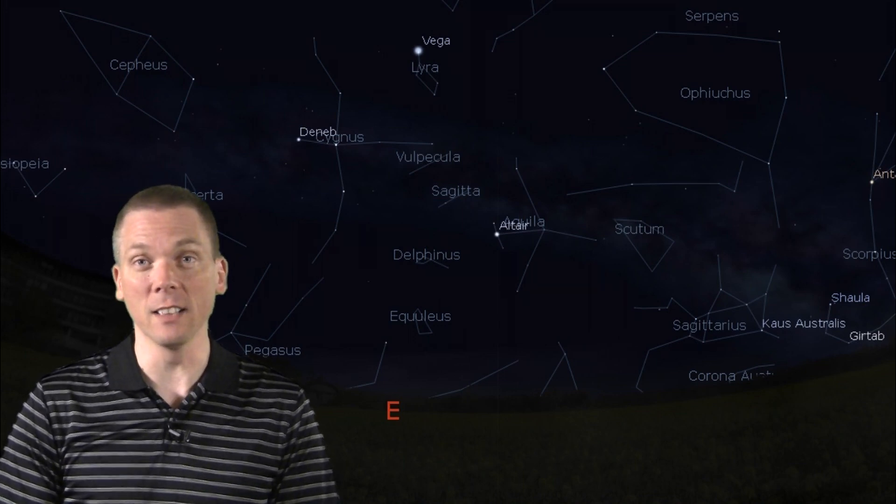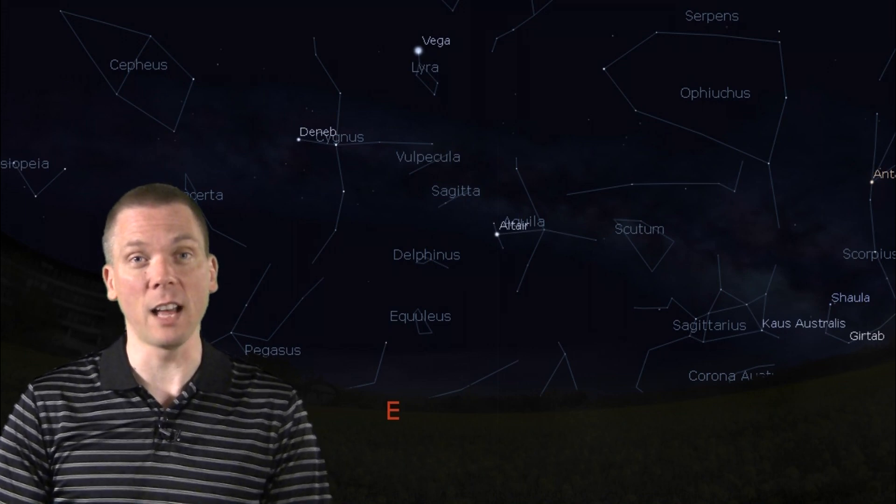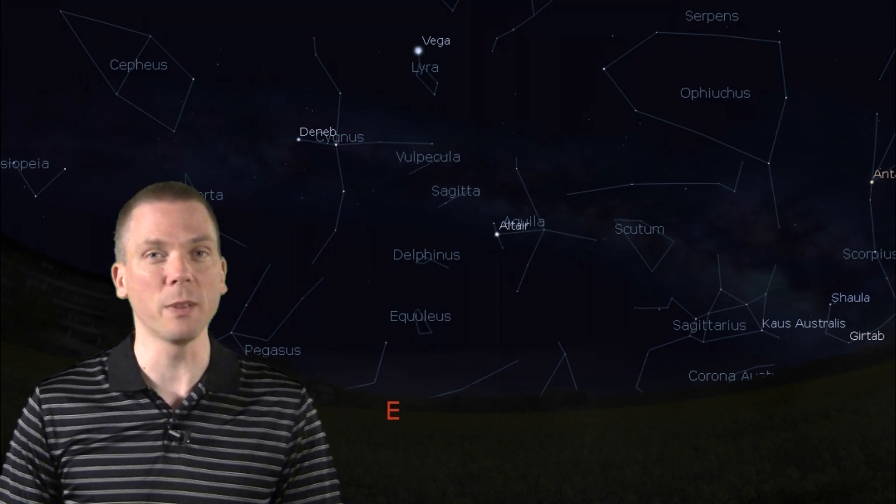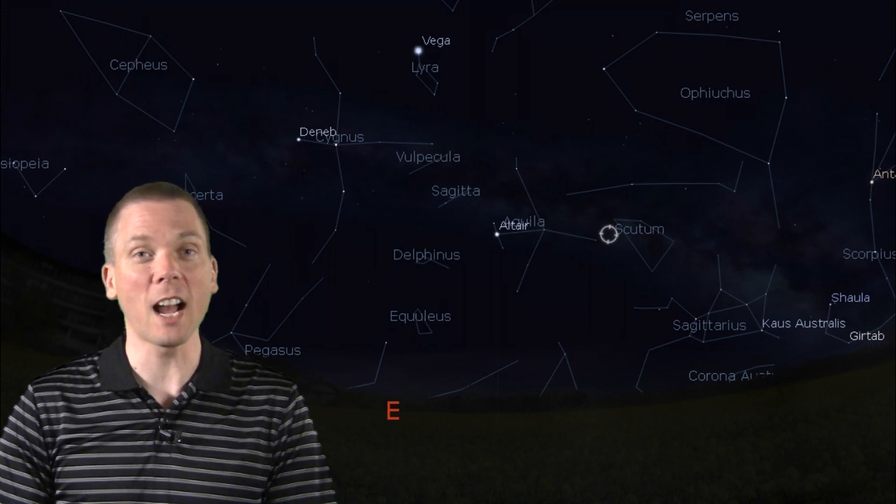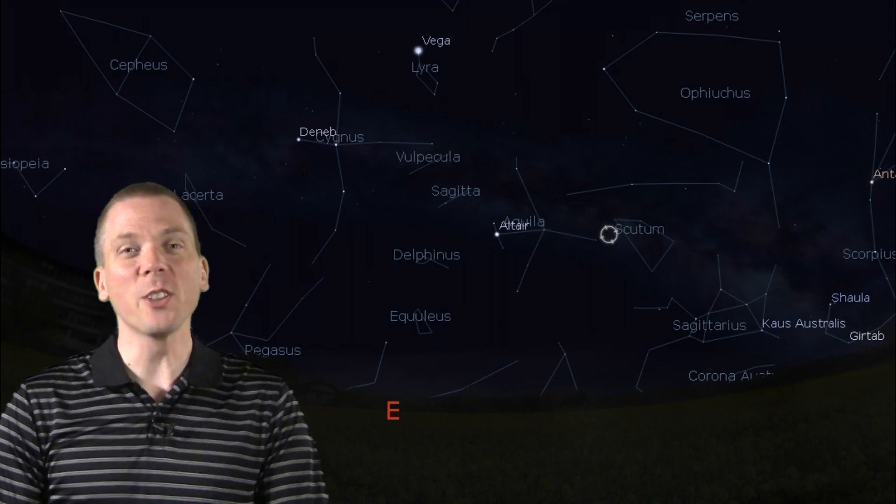The open cluster Messier 11 is at the edge of this cloud of stars, which is too large to see with a telescope, but an area of sky well worth sweeping with binoculars.